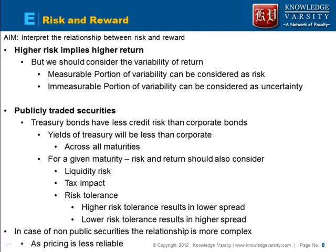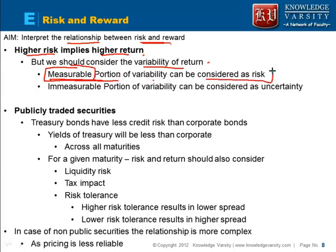Let's see the next M statement here — they are asking us to interpret the relation between risk and reward. We have seen earlier that higher risk means that you should get higher return. But you should consider the variability of the return. We have a portion of the variability which you can measure, and that measurable portion of the variability can be considered as the risk.